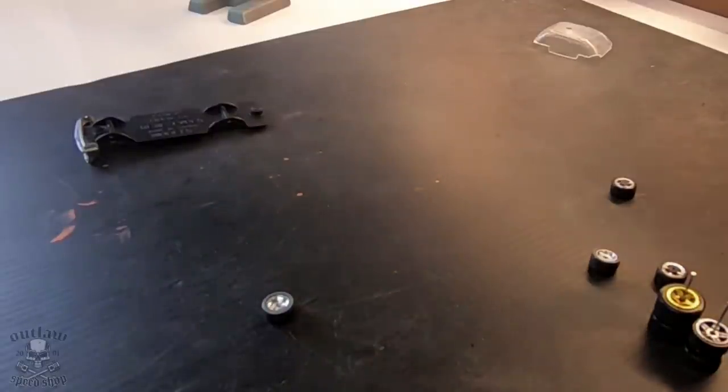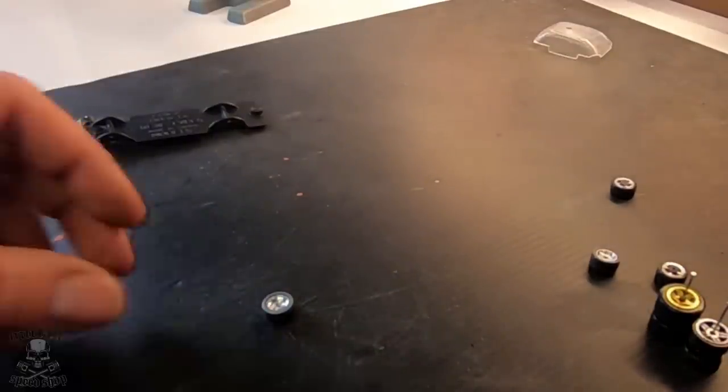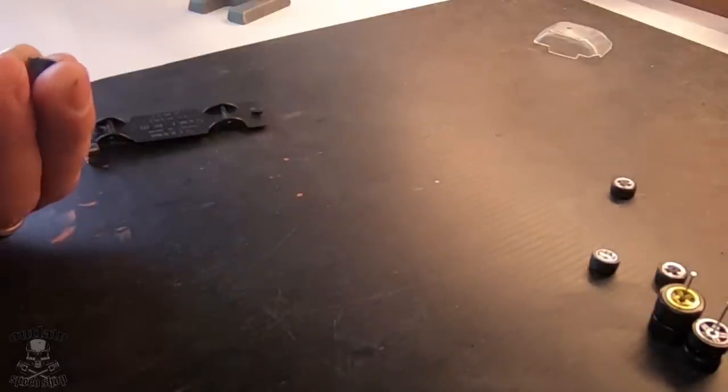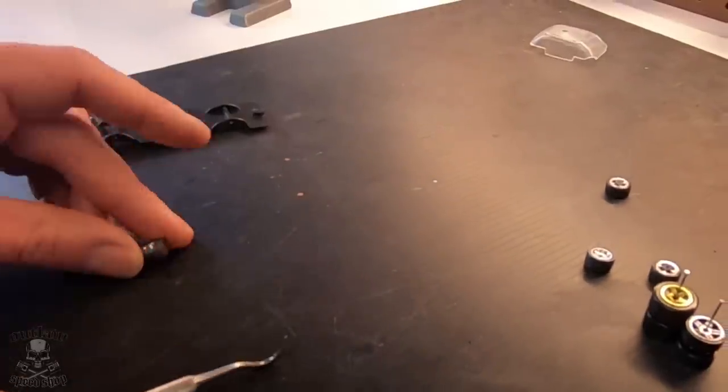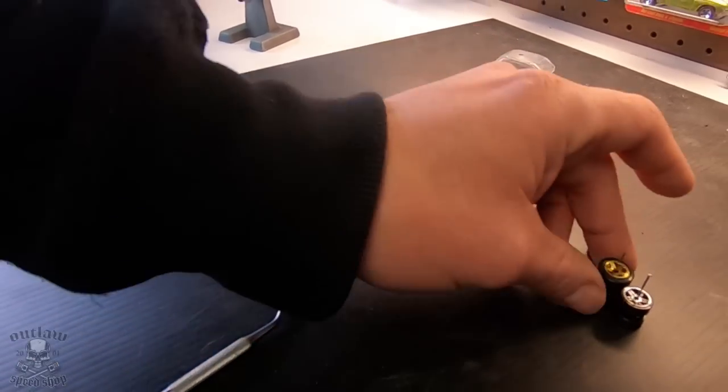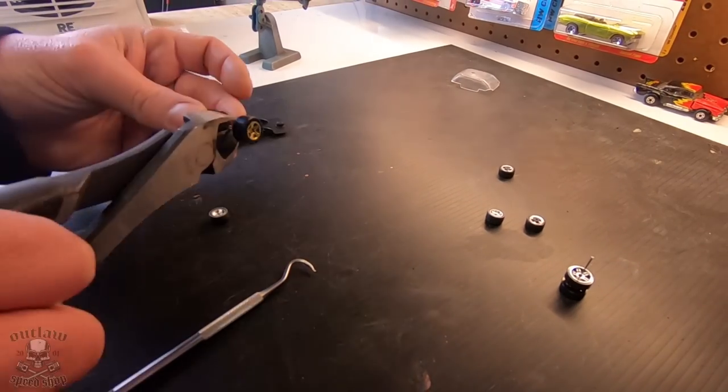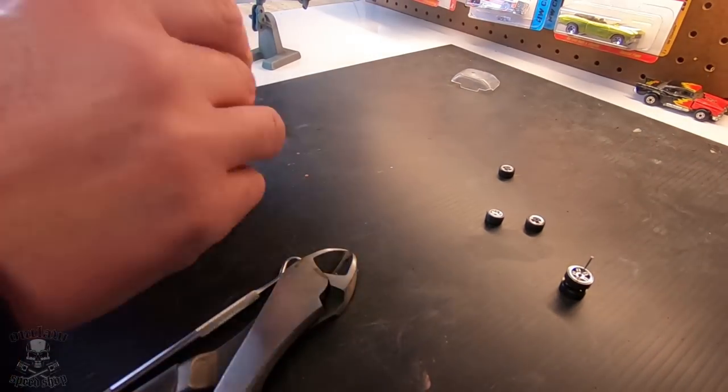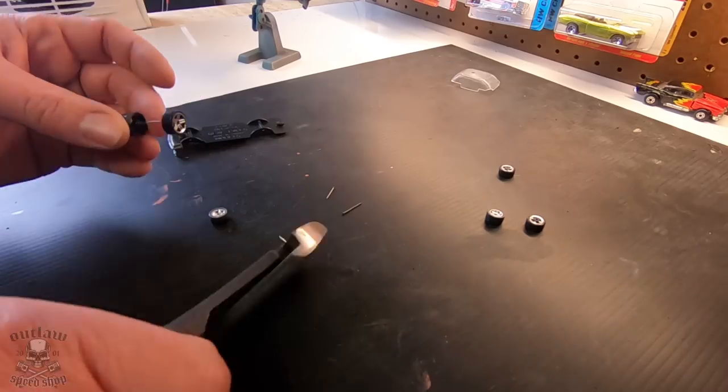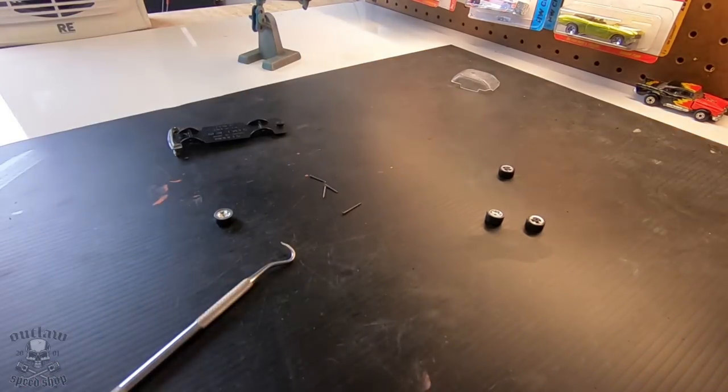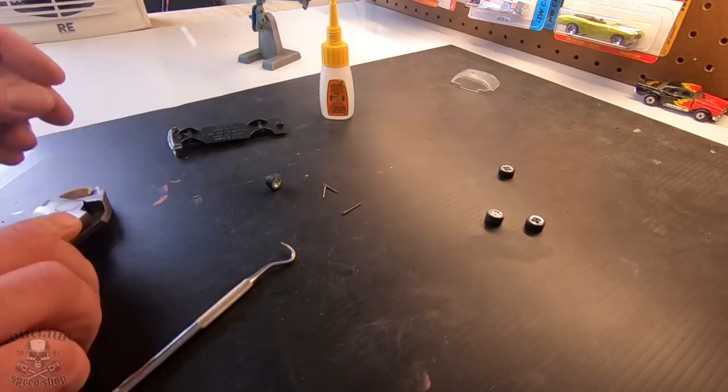So now it's time to put the wheels on. You can see these wheels are off of an Econoline Hot Wheels. I had to shave the little tabs off on the inside of the wheels, almost like a hub, just because the thickness of the body to the frame, it was a little tight. So to get them to fit in there, I had to pretty much grind them down flush.